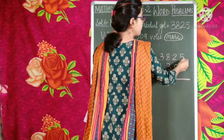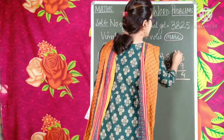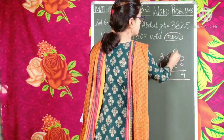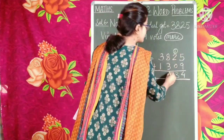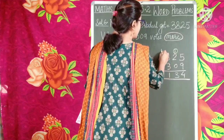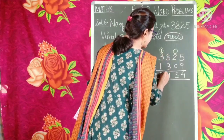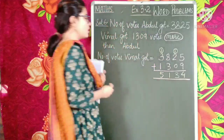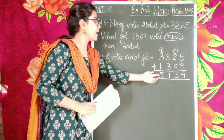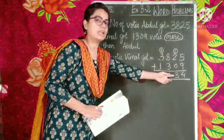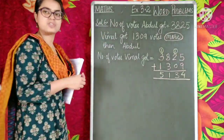We start our addition. 5 plus 9 is 14 — 4 is written here, 1 carried over. 2 plus 1 is 3. Then 8 plus 3 is 11 — 1 is written here, another 1 is carried over. 3 plus 1, 4 plus 1 is 5. So how many votes did Vimal get? Vimal gets 5,134 votes. This is the first part of the question.